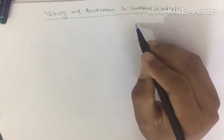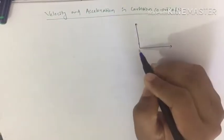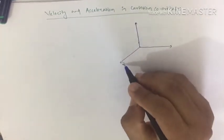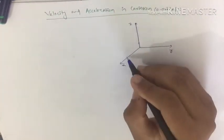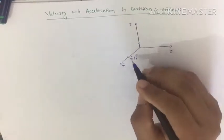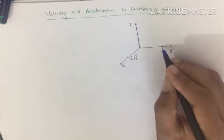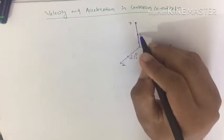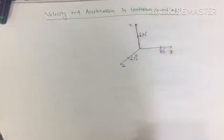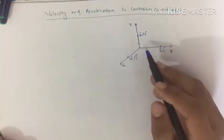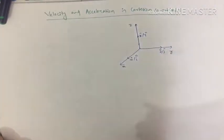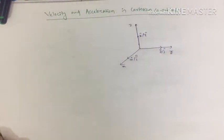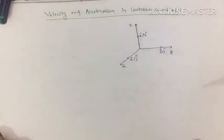Cartesian coordinates. First, look at how you can write the position vector in Cartesian coordinate system. If you have an x-axis, y-axis, and z-axis, then x-cap or i-cap is the unit vector along the x-direction, y-cap or j-cap is the unit vector along the y-direction, and k-cap or z-cap is the unit vector along the z-direction.